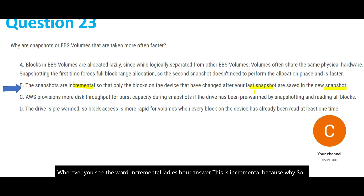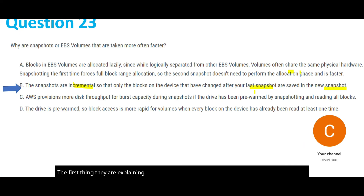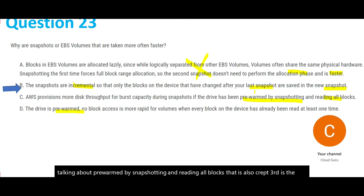The other options — allocation phase being faster, pre-warmed by snapshotting and reading all blocks, and the drive being pre-warmed with every block already read at least once — are all incorrect. Basically it is all about incremental snapshots, and that is why it is fast.